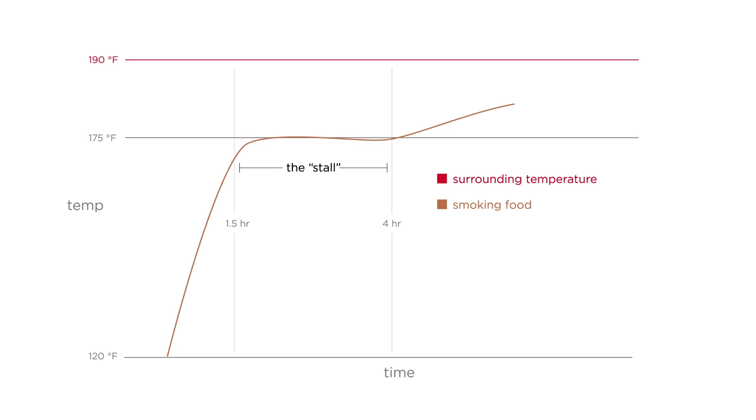If we cook that same brisket sealed tightly, that keeps the juices from evaporating. Then the food's temperature rises steadily to match the surrounding temperature. There's no stall without evaporative cooling.